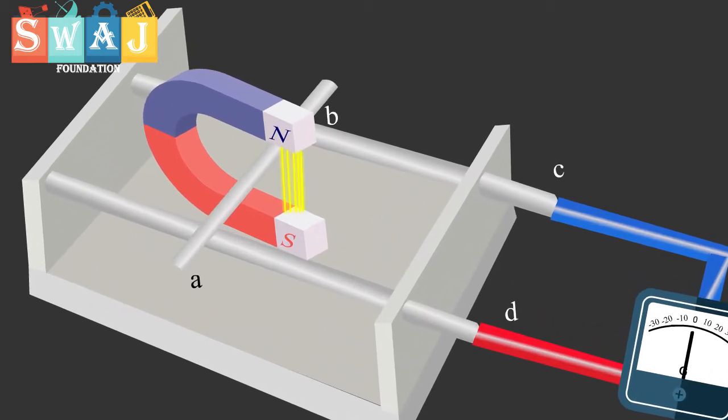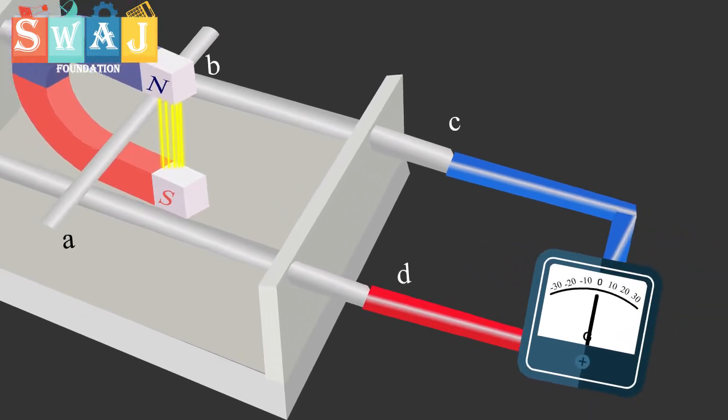A uniform magnetic field B is applied directed into the page through horseshoe magnet. Initially, when the rod is stationary, galvanometer indicates no current in the loop.